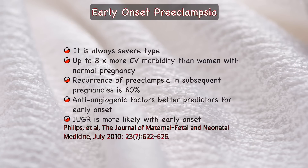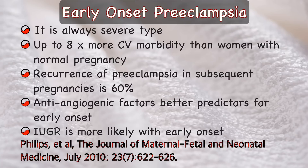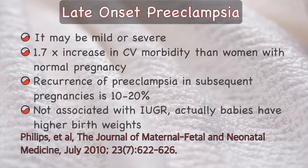Let us see how they are different diseases. Characteristic features of early onset pre-eclampsia: it is always severe type, has up to 8 times more cardiovascular morbidity than women with normal pregnancy, recurrence in subsequent pregnancies is as high as 60%, anti-angiogenic factors are better predictors, and IUGR is more likely. Late onset pre-eclampsia may be mild or severe, has 1.7 times higher cardiovascular morbidity, recurrence is only 10-20%, and it is not associated with IUGR. In fact, babies with late onset pre-eclampsia have higher birth weights.